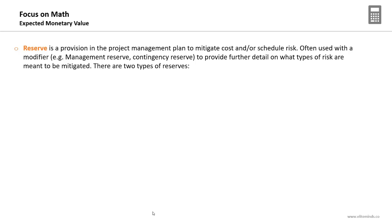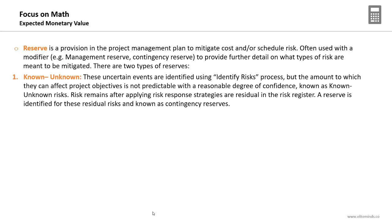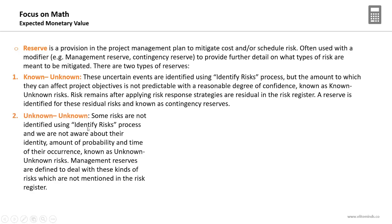The most important application of EMV is reserves calculation. A reserve is a provision in the project management plan to mitigate cost and/or schedule risk. There are two types: contingency reserves, used for 'known unknowns' — risks that were identified — and management reserves, used for 'unknown unknowns.' Known unknowns are uncertain events identified through the identify risks process, and their contingency reserves cover the residual risks remaining after applying risk response strategies.